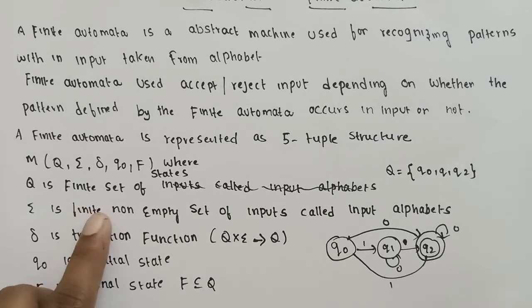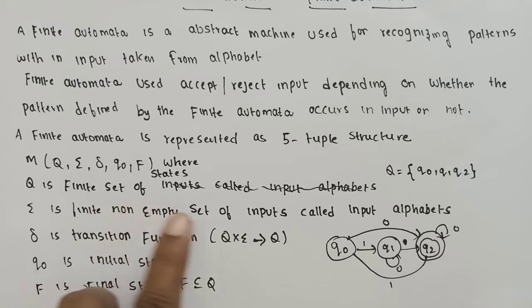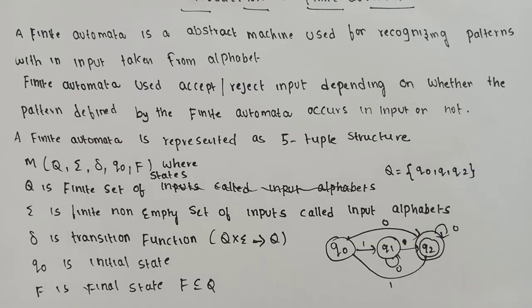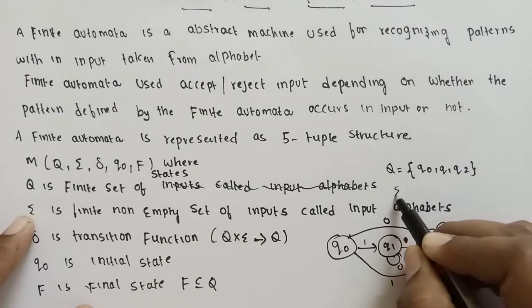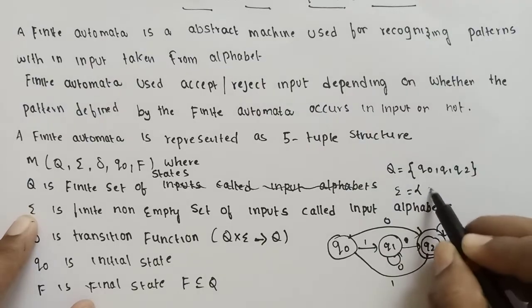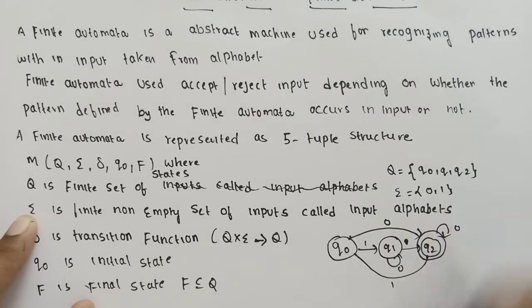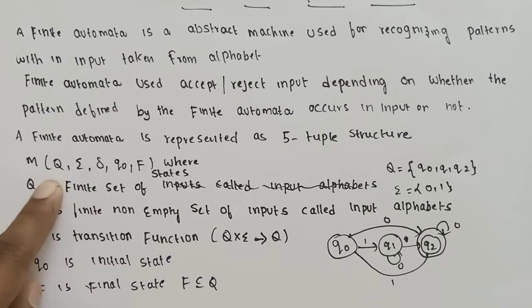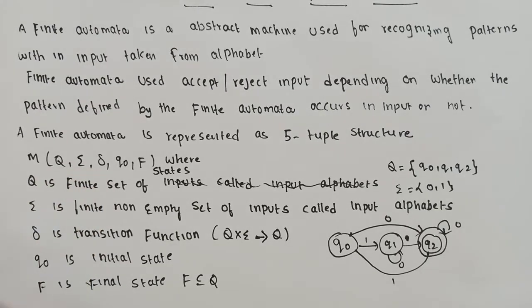Next, sigma. Sigma is a finite non-empty set of inputs called the input alphabet. For example, sigma is equal to the input alphabet of the Finite Automata, representing all the possible input symbols.